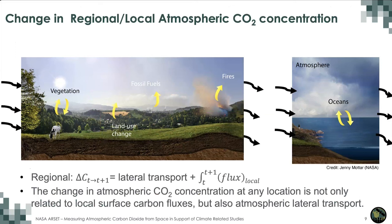In part three, you will learn how to account for background values and extract local fluxes using OCO3 observations. The regional change of CO2 concentration is not only related to surface fluxes but also related to lateral transport and background values.